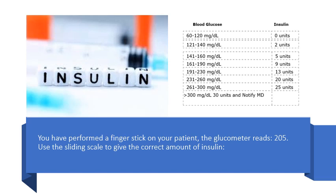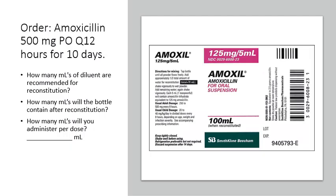This problem is an example of reading a sliding scale. You performed a finger stick and the glucometer reads 205 mg/dL. Using the sliding scale to find where 205 falls — it falls between 191 and 230 — so you will give 13 units of insulin to cover the patient.